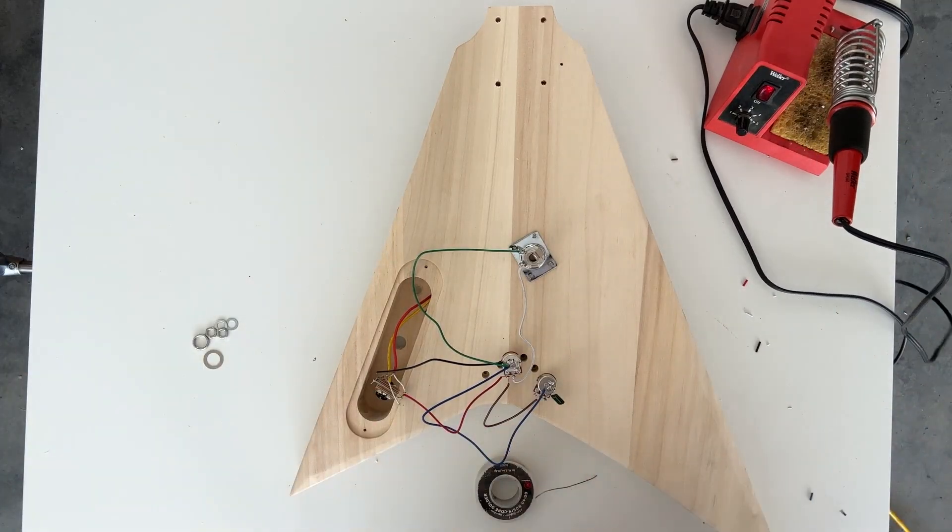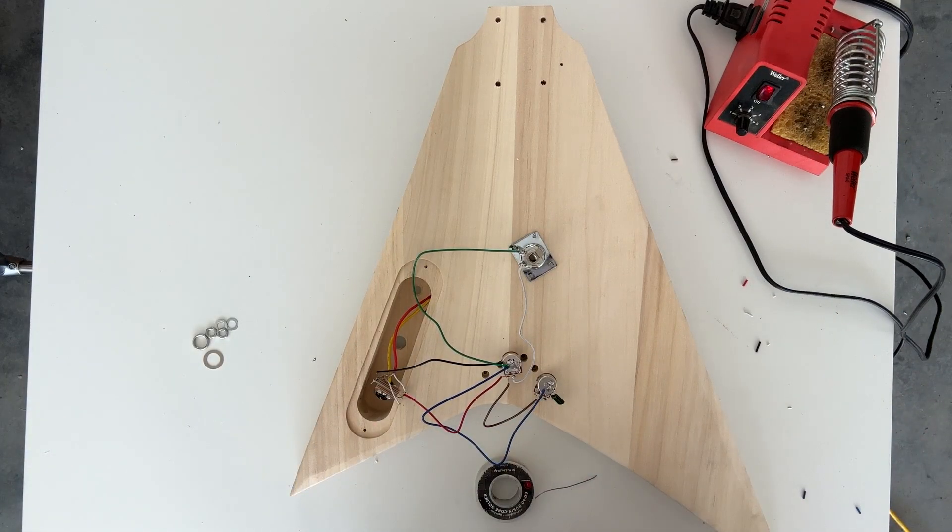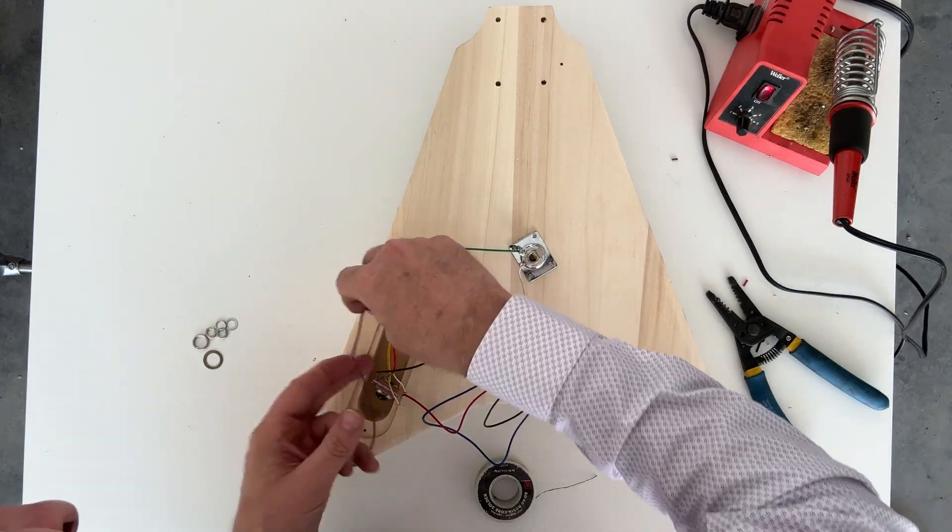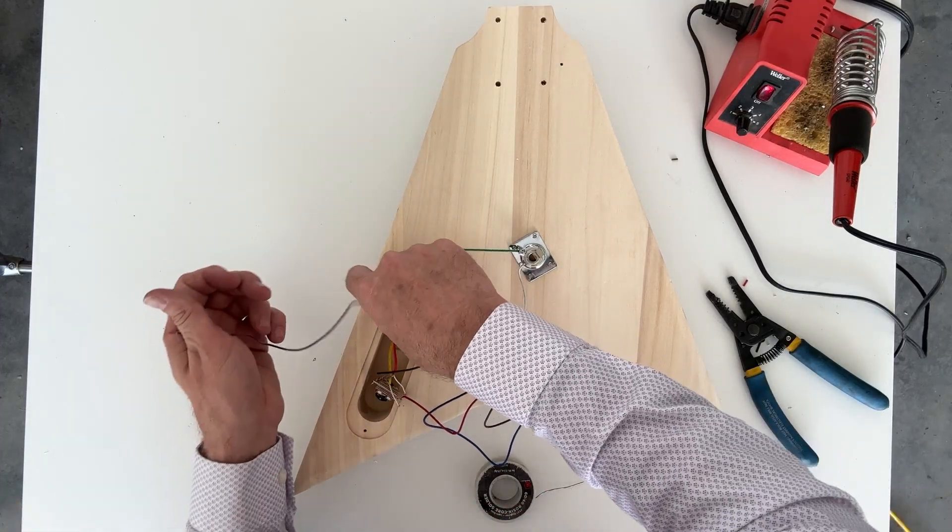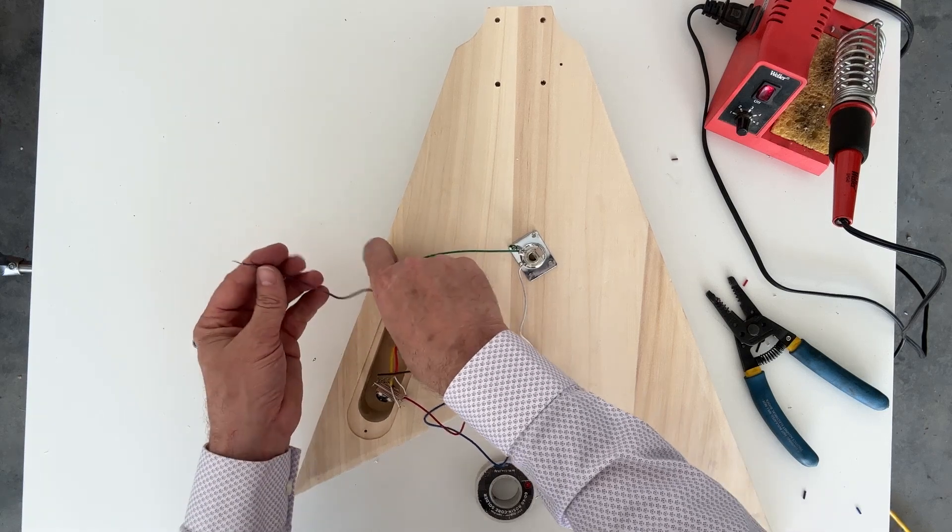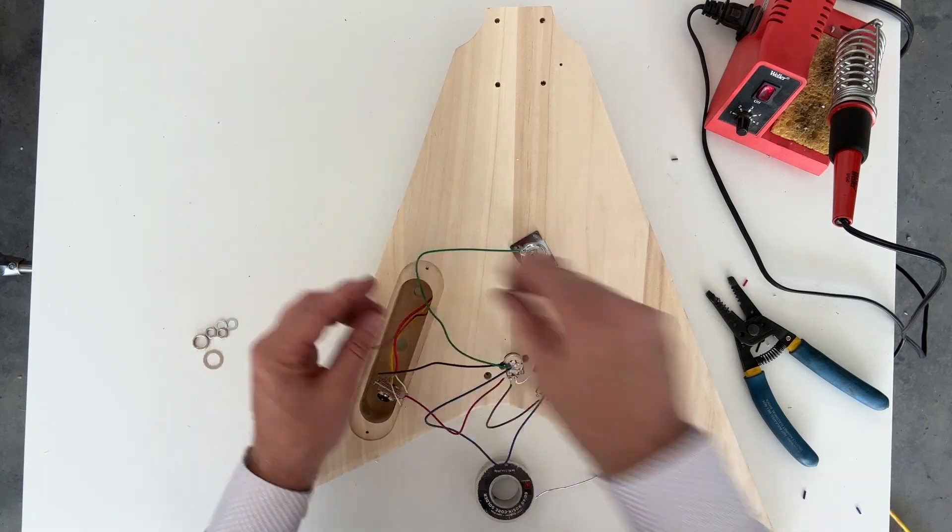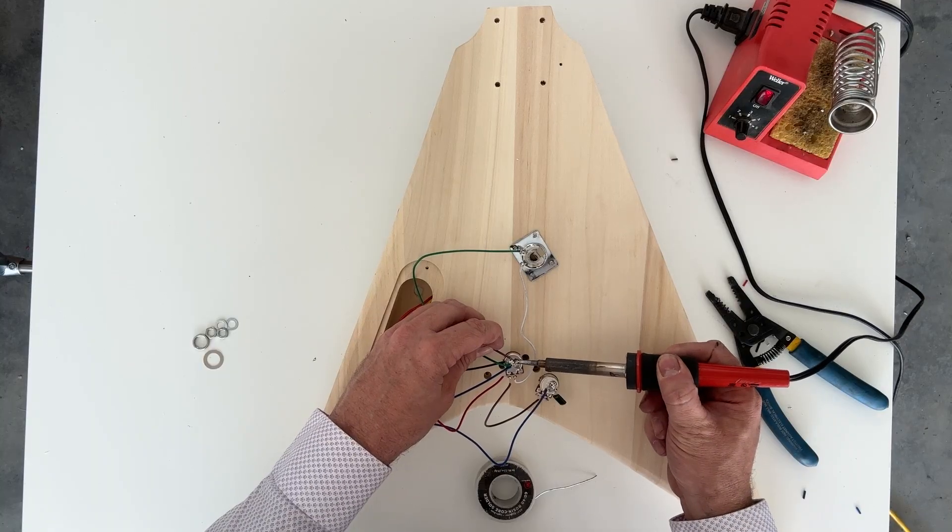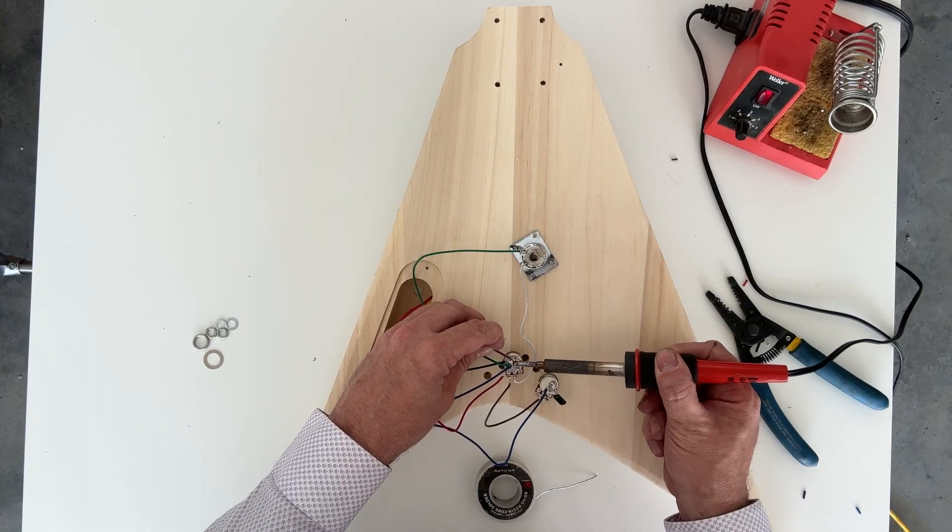This last wire, as I mentioned, will go through this hole in the control cavity out to the bridge posts, and then we'll just connect the other end to our big old bundle of grounds here on the back of the volume pot.